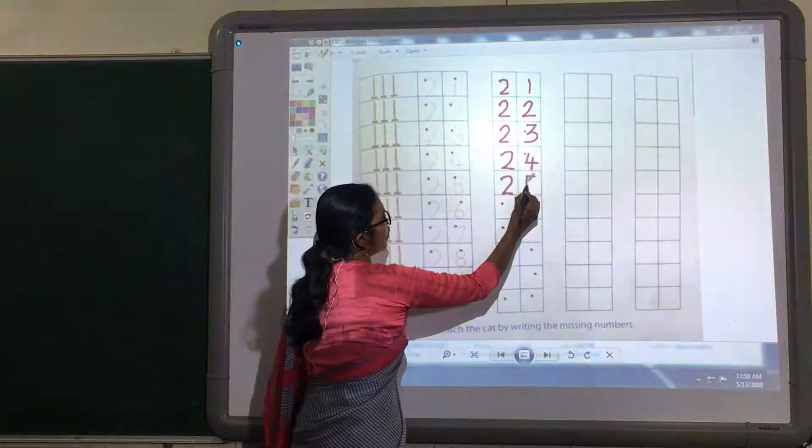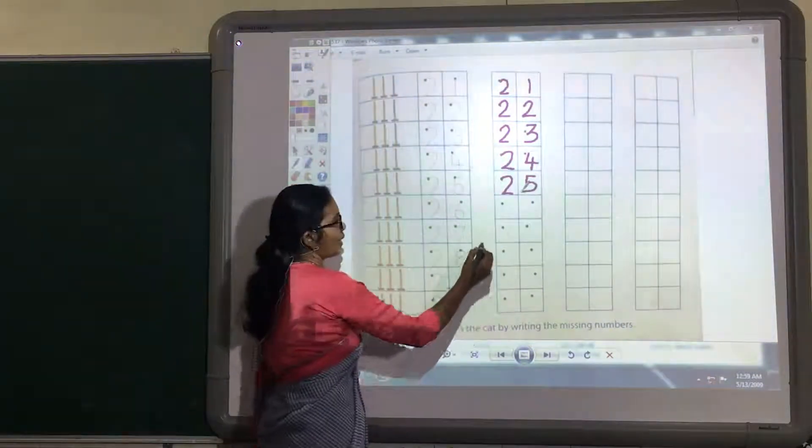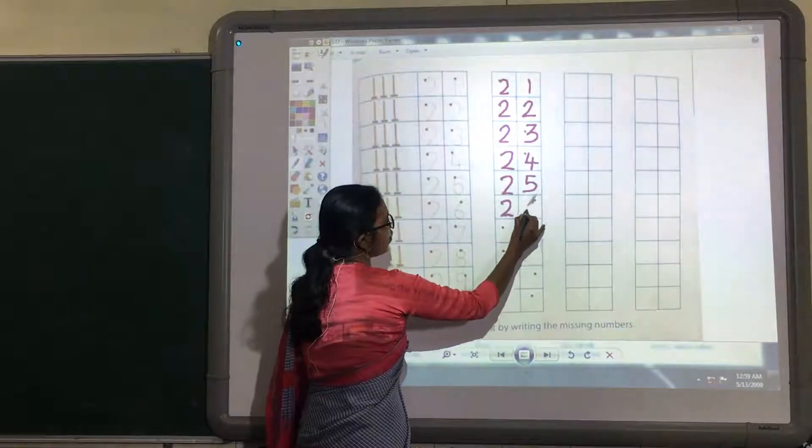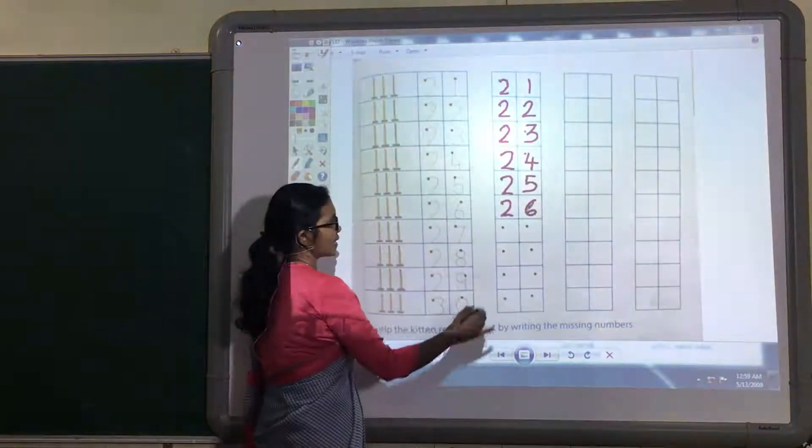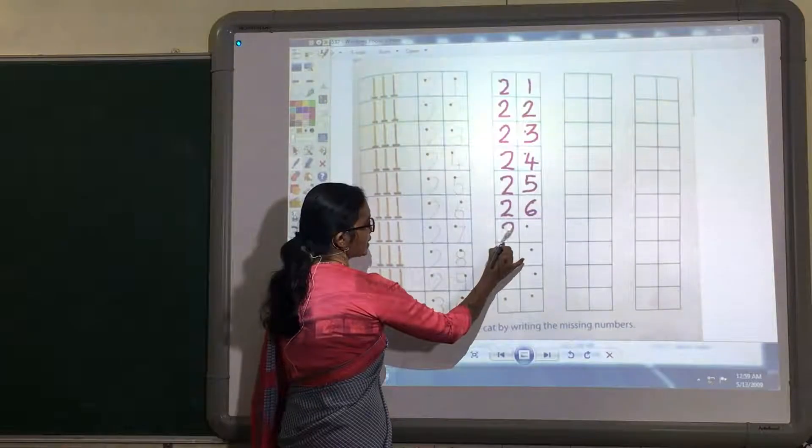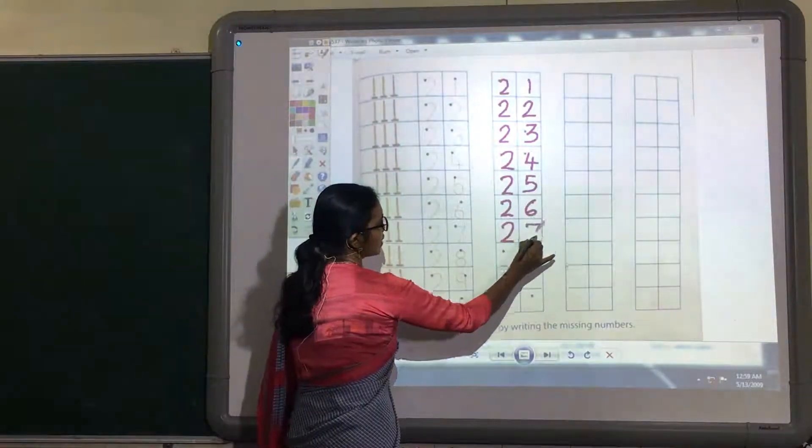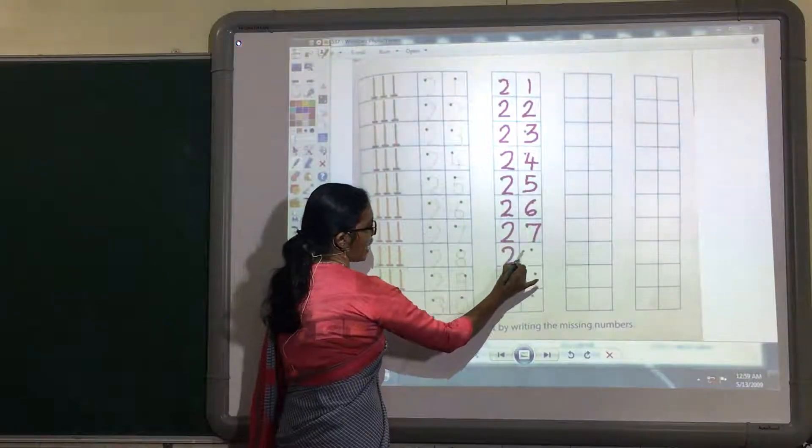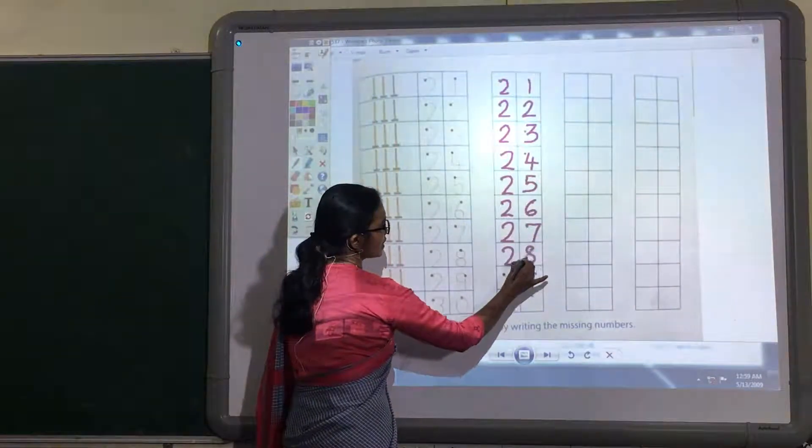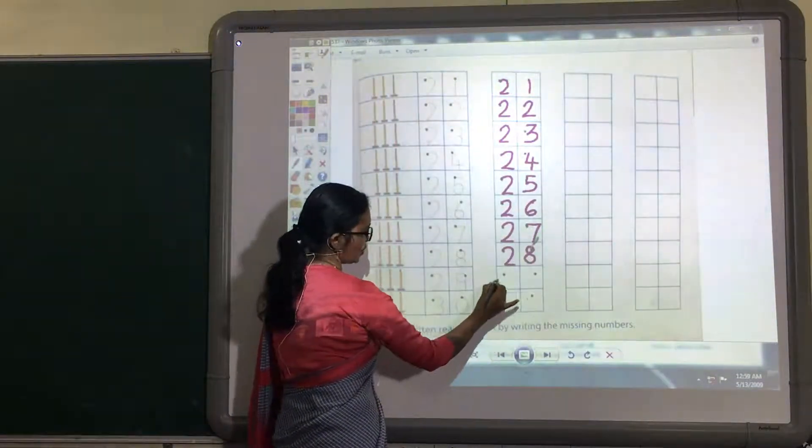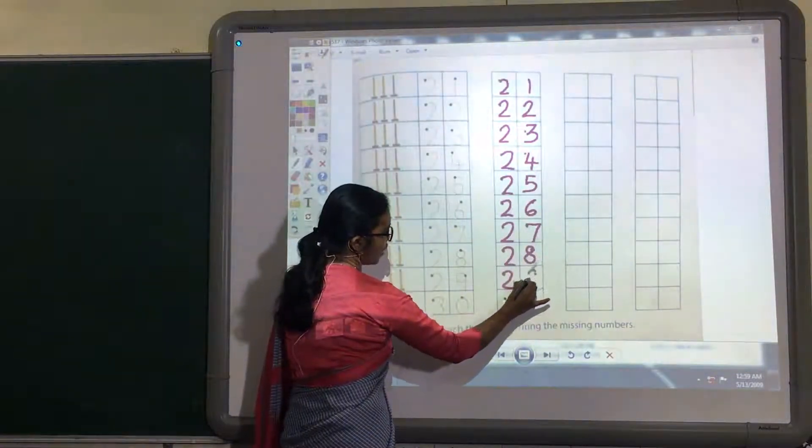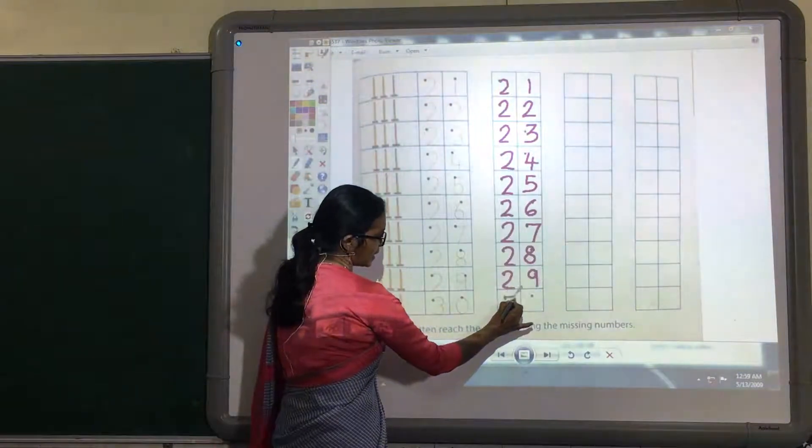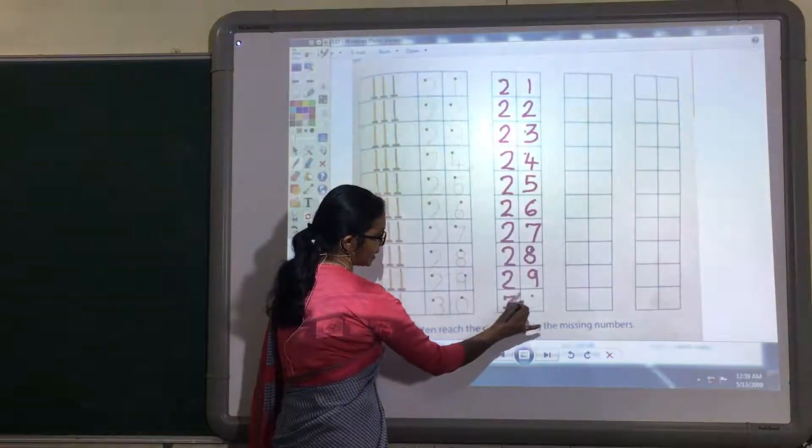Two tens and five ones, 25. Two tens and six ones, 26. Two tens and seven ones, 27. Two tens and eight ones, 28. Two tens and nine ones, 29. Three tens, 30.